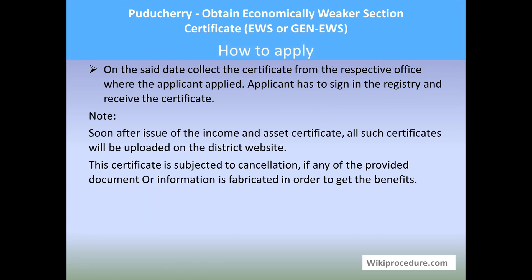On the set date, the applicant has to go to the office where they applied and sign the register to receive the certificate. Soon after issue of the income and asset certificate, all such certificates will be uploaded to the respective district website by the authorities. The certificate is subject to cancellation if at any point it is proved that the provided information or documents are forged or fabricated.